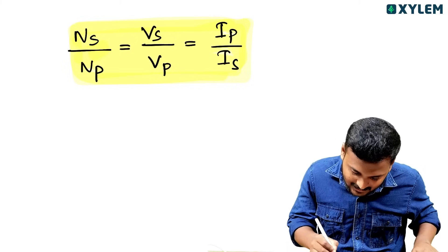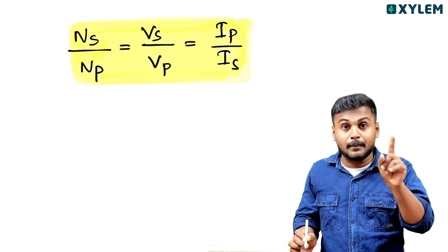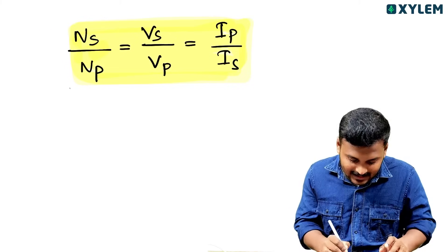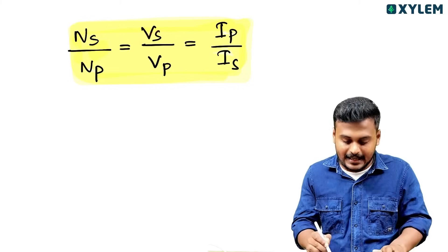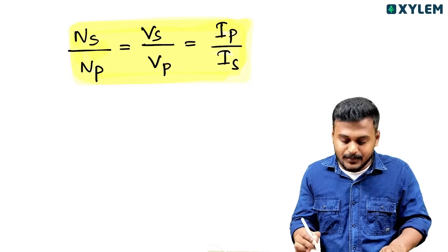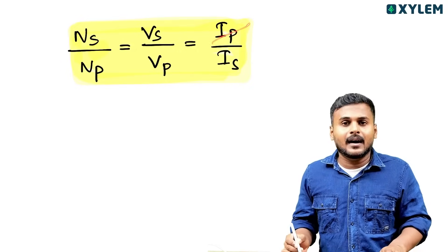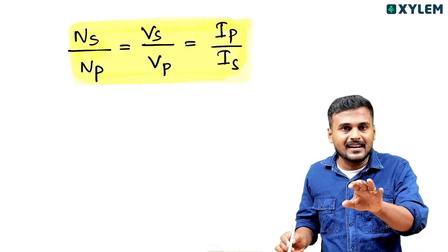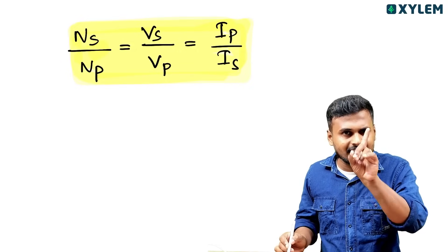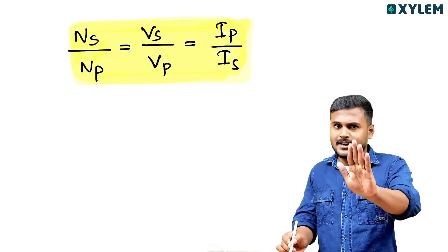So we have: number of turns in secondary, number of turns in primary, voltage in secondary, voltage in primary, current in primary, current in secondary. With this formula, we will be able to answer exam questions.